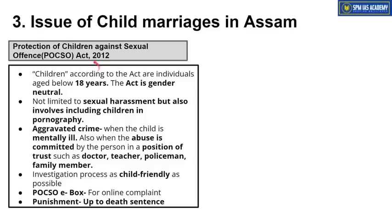POCSO Act mein ek baat aur dhyan dene wali hai ki this act is gender neutral. Matlab aisa nahi hai ki this act considers sexual offense only against a girl child. UPSC ne ek baar yeh question poocha tha — POCSO Act considers sexual offense only against girl child as an offense — that is not true. The POCSO Act is gender neutral: it punishes for sexual offense against both girl as well as boy child or any other gender. Also, POCSO Act is not just limited to sexual harassment — it also includes children in pornography.